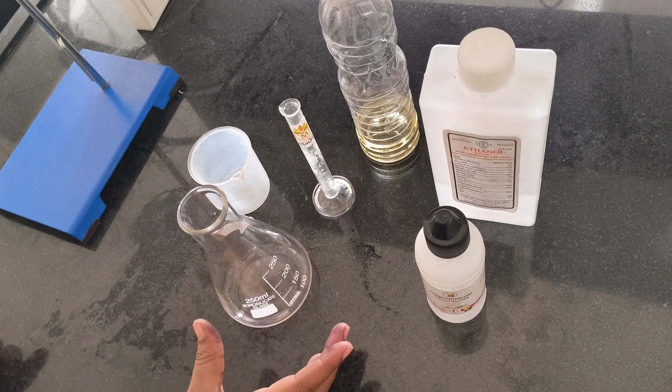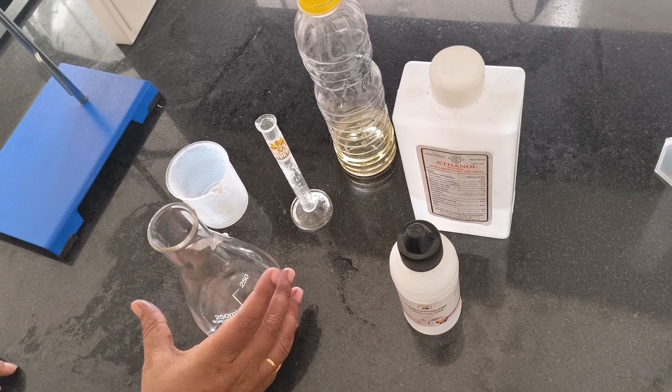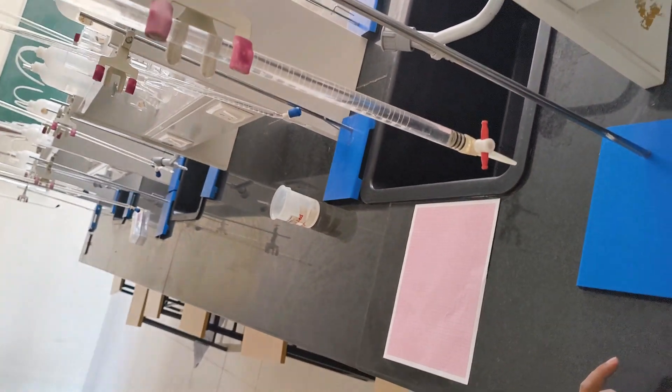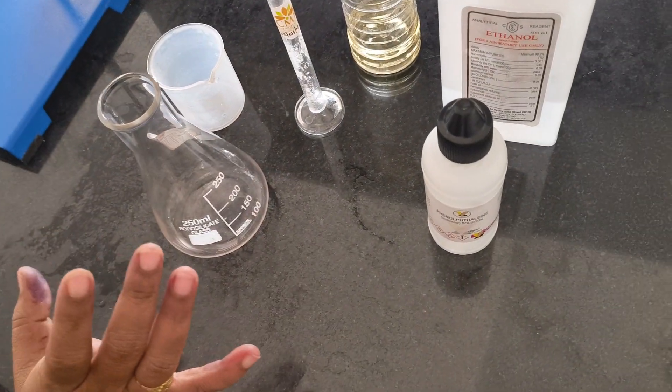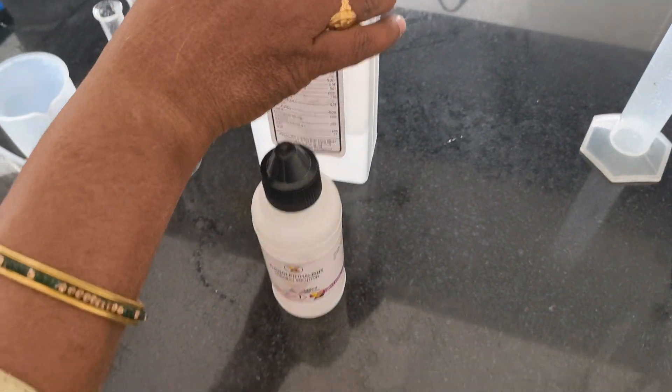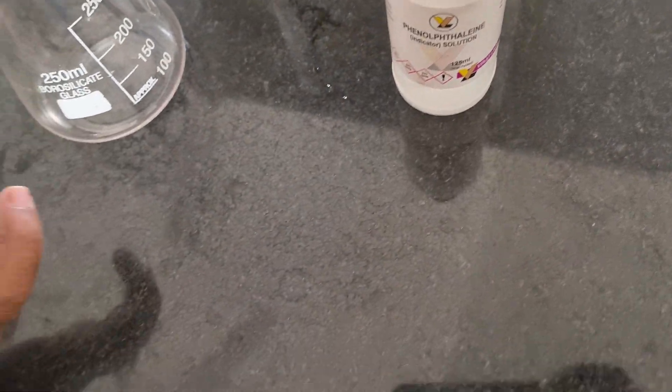Experiment name: determination of acid value of coconut oil. In this experiment we require apparatus only two: burette and conical flask. Coming to the chemicals: coconut oil, ethyl alcohol solution, and phenophthalein indicator. Next, coming to the principle.